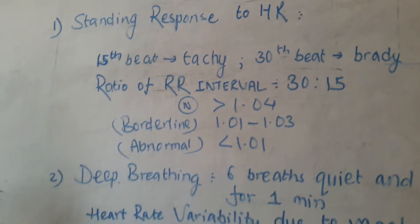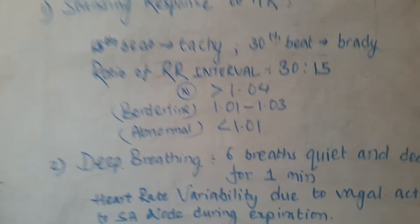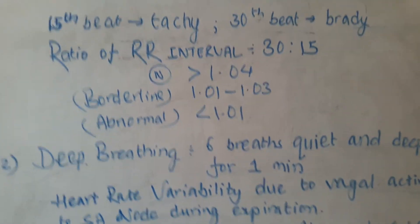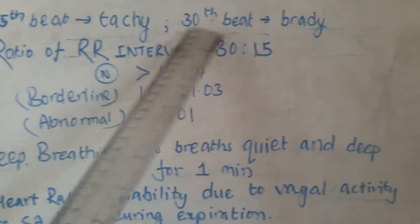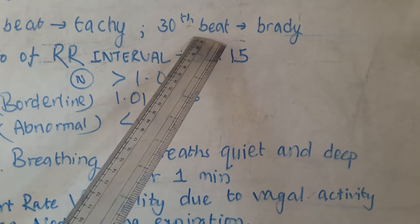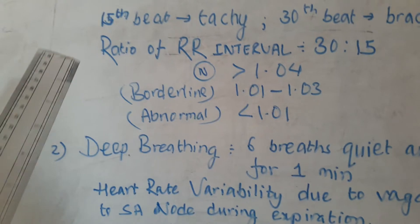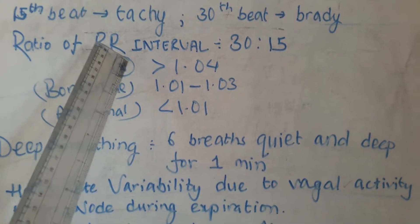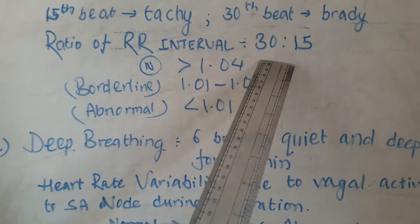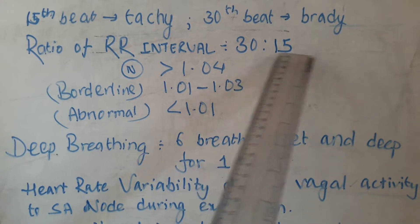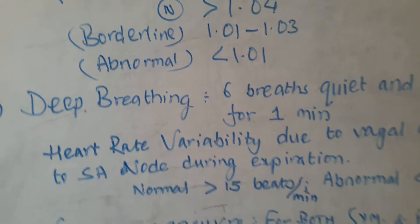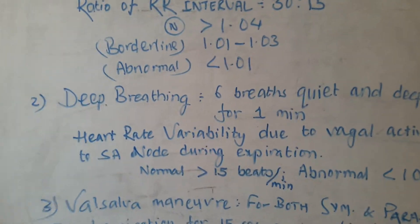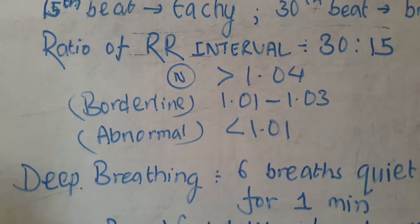In the standing response to heart rate, when we stand from a sitting position there is an increase in heart rate at the 15th beat and bradycardia at the 30th beat. We take the ratio of the R-R interval. In bradycardia the R-R interval is high, so we take the 30:15 ratio. Normal is more than 1.04, borderline is 1.01 to 1.03, and abnormal is less than 1.01.